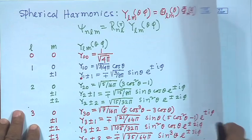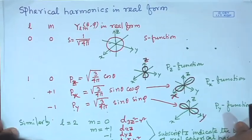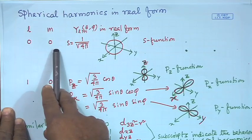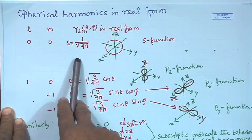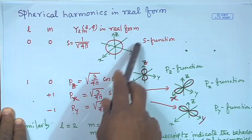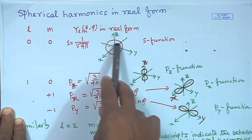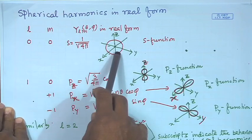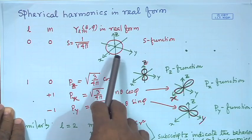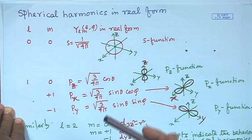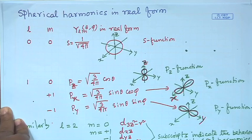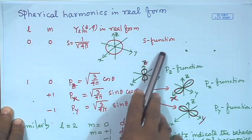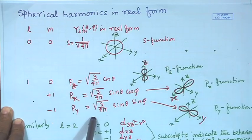In real form, the spherical harmonics can be written as follows. For L=0, M=0: S = 1/√(4π), and its graph shows a spherical — circular — distribution. When you rotate it about the z-axis it will be a sphere, so this is called the S function. In real form, this is basically L=0 and M=0, whatever the value of n. We call this the S orbital or S function.